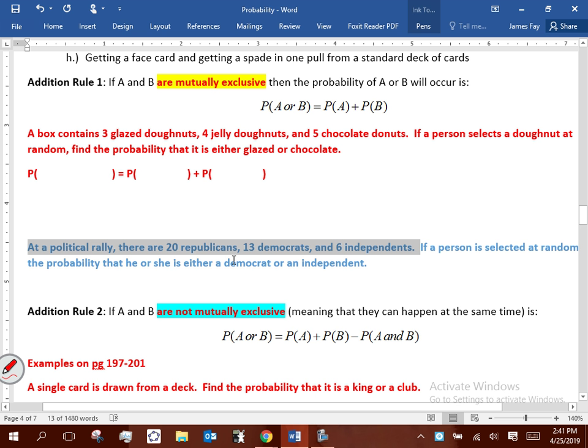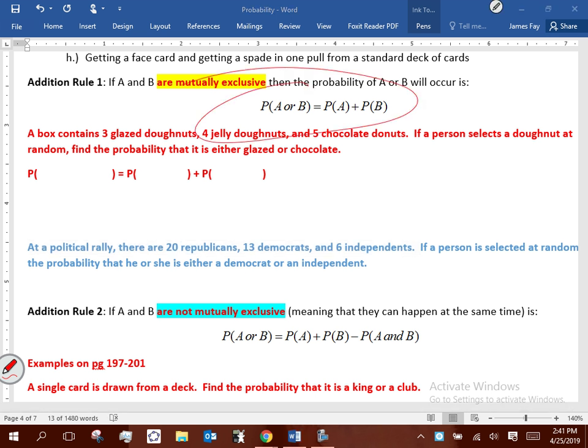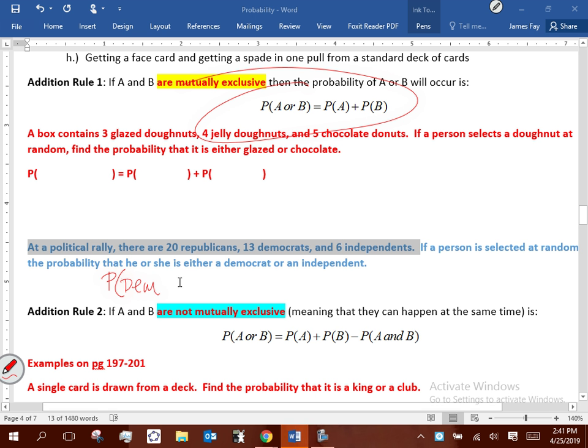Why do we need to know that? Because if they're mutually exclusive, there's the probability formula we're going to use. So the question is, what's the probability of randomly selecting a person and they either be independent or Democrat? So Democrat or independent is the event that we're interested in.